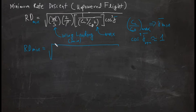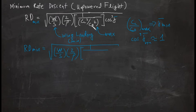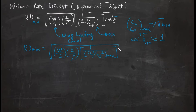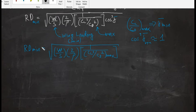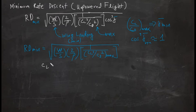The final formula for the minimum rate of descent is: √(W/S · 2/ρ · 1/(CL³/CD²)). Wing loading should be minimum, but aerodynamically we can maximize CL³/CD². Since cosine³γ̄ ≈ 1, it is already neglected — we are simply multiplying by 1. The question now is: how do we mathematically solve for (CL³/CD²)_max?